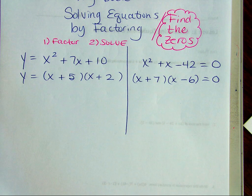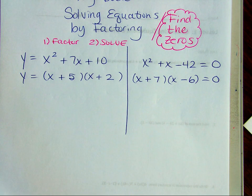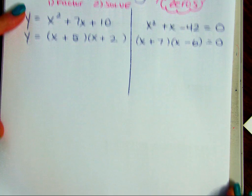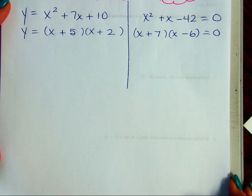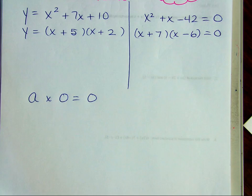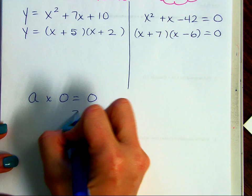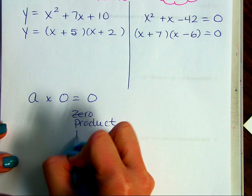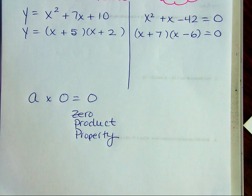Let's talk about something you learned back in second or third grade — your multiplication facts. Your zeros were the easiest because anything times zero is always zero. We're going to recall that property and give it a name today. Any number times zero equals zero — and that's called the zero product property. We use this property to help us find the zeros in algebra.